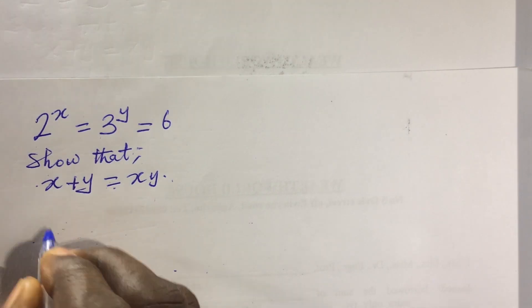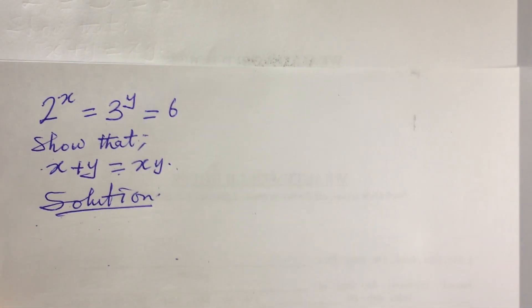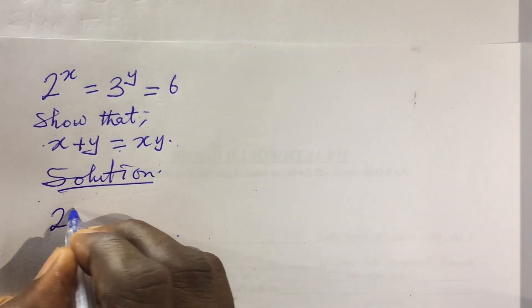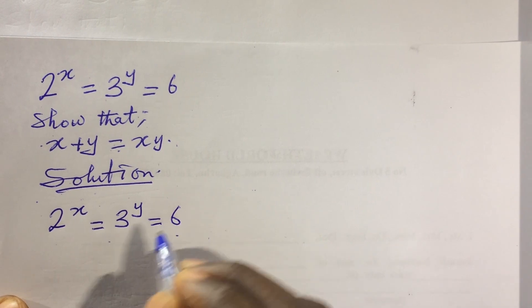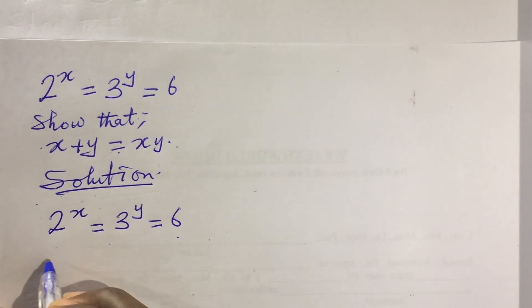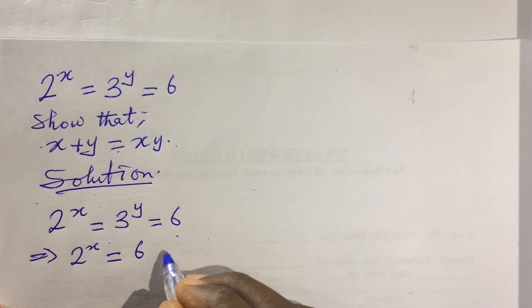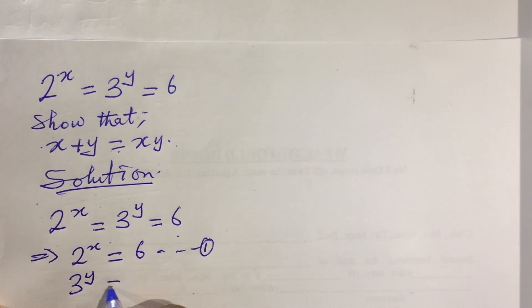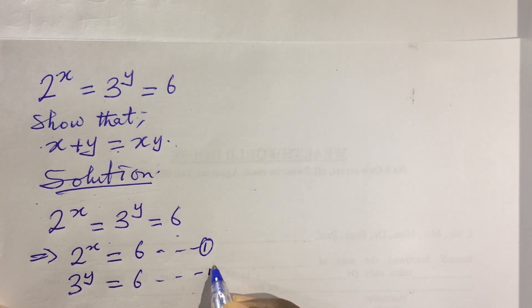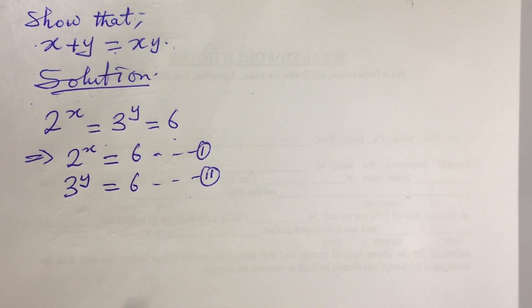Now let's take our solution. We write down our question: 2 to the power of x equals 3 to the power of y equals 6. From this expression we can carve out two equations. Equation 1: 2 to the power of x equals 6. Equation 2: 3 to the power of y equals 6.